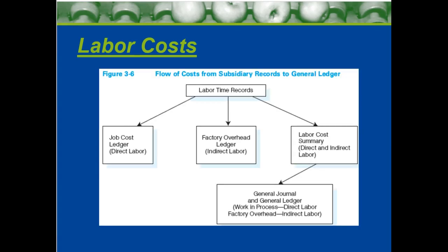We can see a certain type of flow that we have here. The labor time records — what is it recording? It's giving us information that's needed for the labor cost summary, the factory overhead ledger, and the job cost ledger. Essentially, a lot of this information is going to go into the general ledger and into different parts of the general ledger.